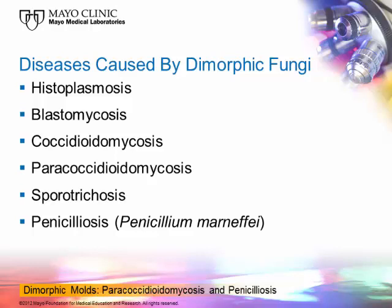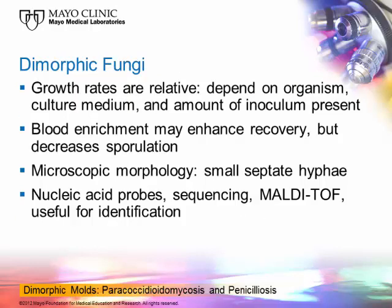Paracoccidioidomycosis and penicillosis are infections that are generally not found in the United States. All the others are found in North America. In terms of the dimorphic fungi, they all have some features that are similar, including growth rate. The growth rate is relative — it depends on the organism, the culture medium, and how much organism is present in the clinical specimen. Textbooks tend to say there's a fixed amount of time for them to grow, like four to six weeks.